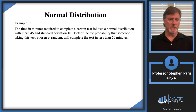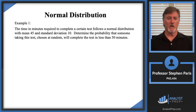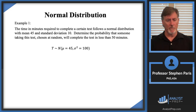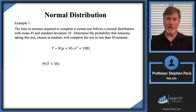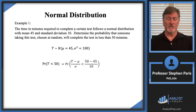Let's look at an example. The time in minutes required to complete a test follows a normal distribution with mean 45 and standard deviation 10. We want the probability that someone chosen at random completes the test in less than 50 minutes. Given μ = 45 and σ = 10, so σ² = 100, I write this as N(45, 100) and seek P(T < 50). The first step is to apply the standardizing transformation.